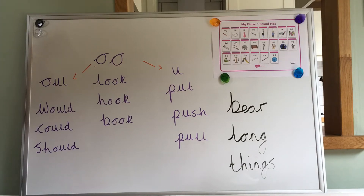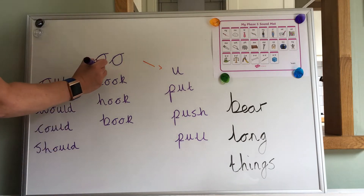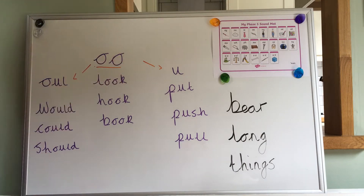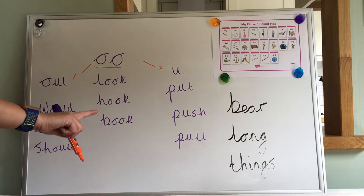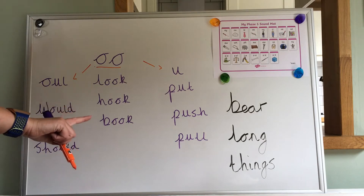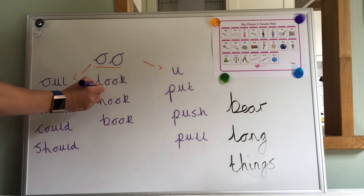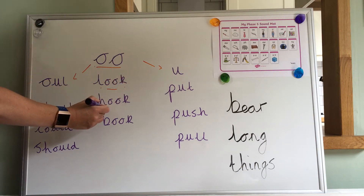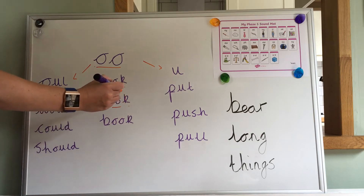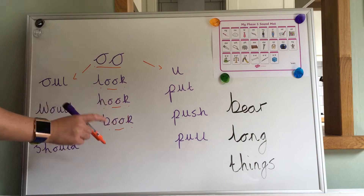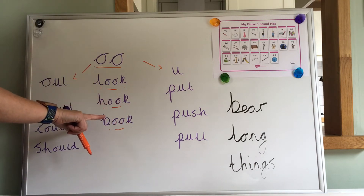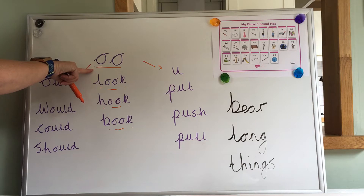This week we've been looking at the alternative spellings for the 'u' sound. We know from our phase three that we have the digraph 'oo' that looks like this, and we found that sound in these words. Let's add our sound buttons again to remember where that sound is. Look, hook, and book contain this spelling for the sound.